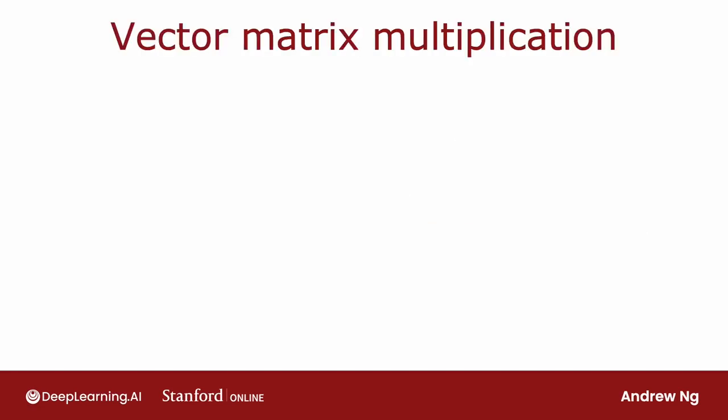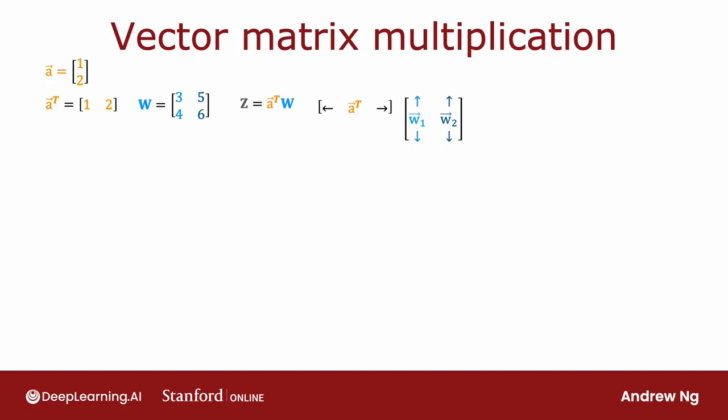Now let's look at vector-matrix multiplication, which is when you take a vector and multiply it by a matrix. Here again is the vector A: 1, 2, and A transpose is A laid on the side — so rather than a 2 by 1 matrix, it becomes a 1 by 2 matrix. Let me now create a 2 by 2 matrix W with elements 3, 4, 5, 6. We want to compute Z as A transpose times W.